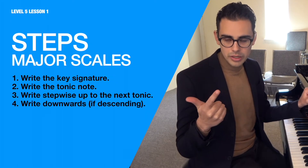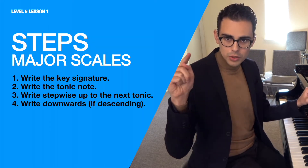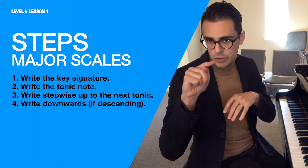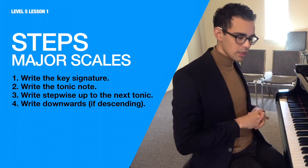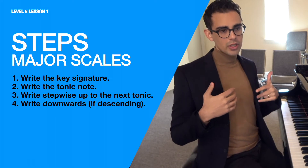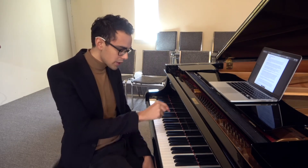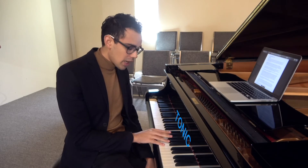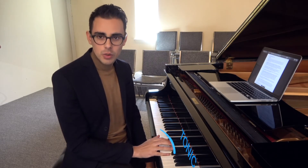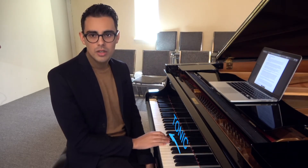Here are the steps to writing a major scale. First, write down the key signature. Then write down the tonic note. Then write all the other notes in stepwise motion going up to the next tonic. If the question asks for the descending version too, come back down to the original tonic. If writing without a key signature, start on the tonic, go up and down an octave, and then add the accidentals into the music itself — leaving enough space between notes. For example, E major has four sharps: write the key signature, write tonic E, then go up stepwise to E and back down.